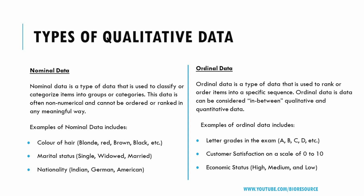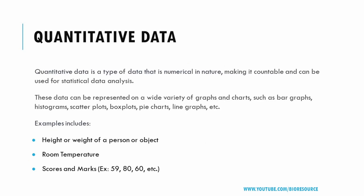Examples of ordinal data include letter grades in an exam like A, B, C, D; rankings in a competition like first, second, third; and economic status like high, medium, and low.